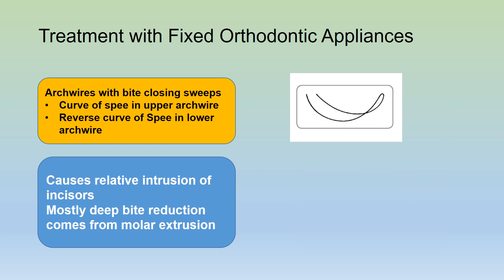Deep bite correction can also be achieved using arch wires with bite-closing curves — a curve of Spee in the upper arch wire and a reverse curve of Spee in the lower arch wire. This causes a relative intrusion of the incisors, though mostly the deep bite reduction comes from molar extrusion.